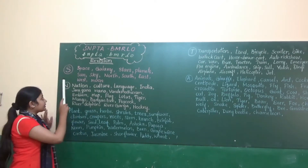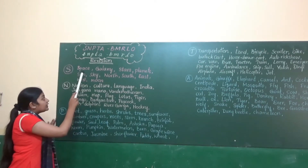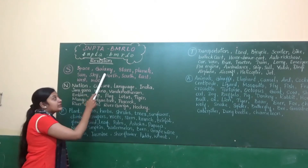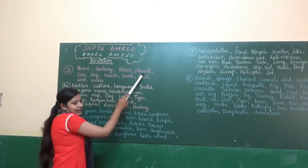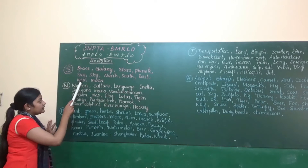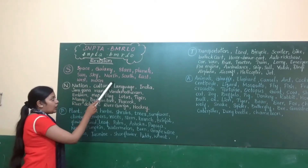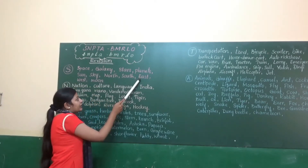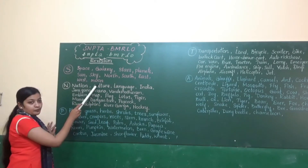We will go with the S. It's space: galaxy, stars, planets, sun, sky, north, south, east, west, moon.